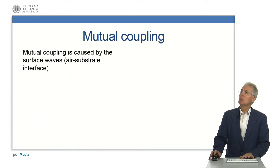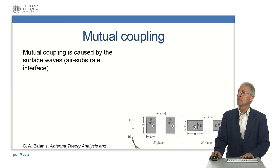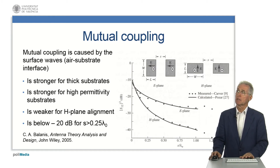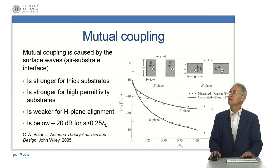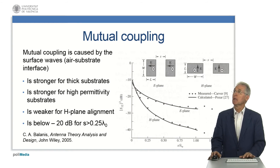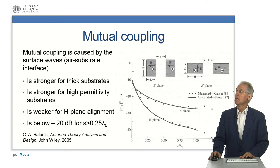A very important issue in array design is mutual coupling, which is mostly caused by surface waves guided by the air-substrate interface. The mutual coupling is stronger for thick and high-permittivity substrates. As we can see in the representative behavior shown in this figure, the mutual coupling is weaker for H-plane alignment, and is always below −20 dB for inter-element spacing above a quarter of the free-space wavelength.